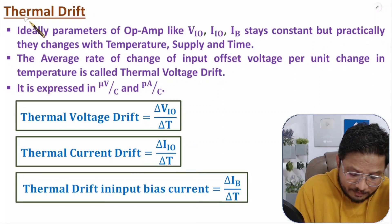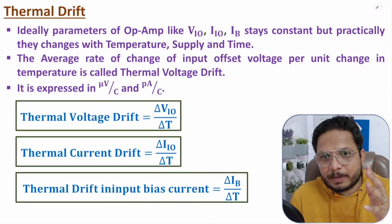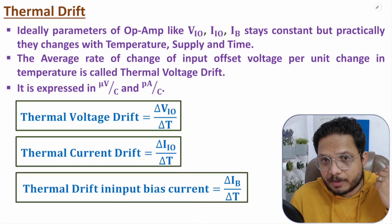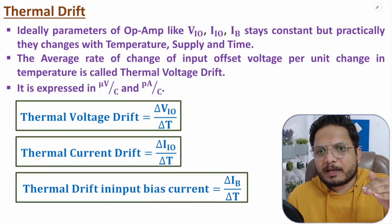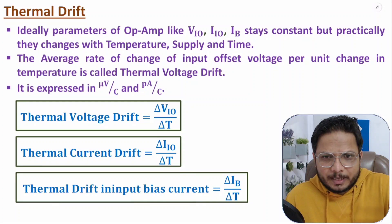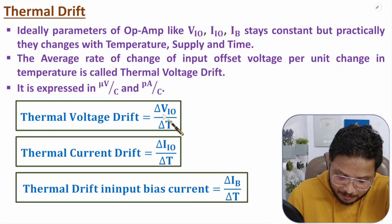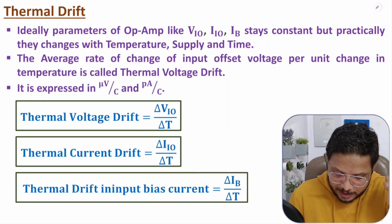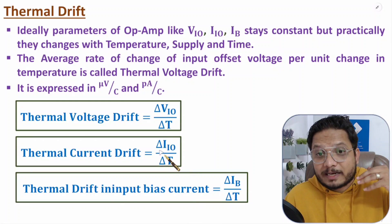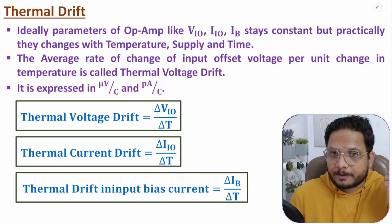So thermal drift means variation in a parameter with respect to variation in temperature. This variation can occur in input offset voltage, input offset current, or input bias current.